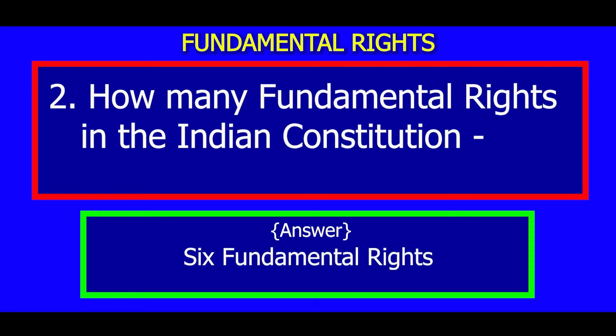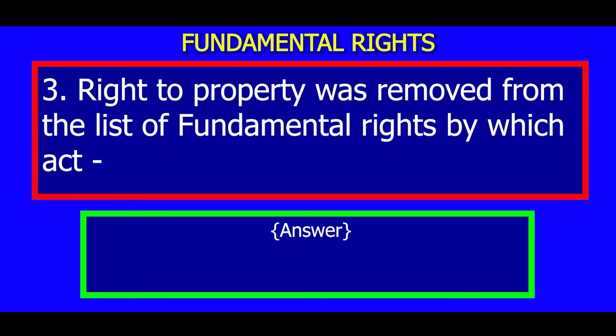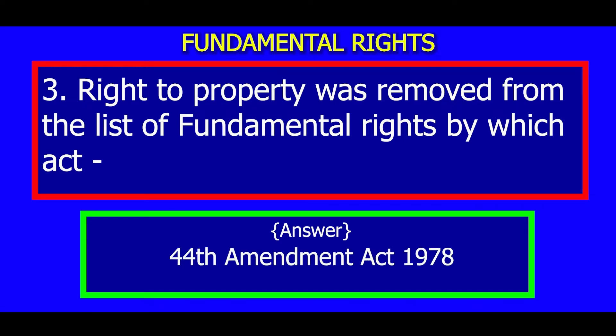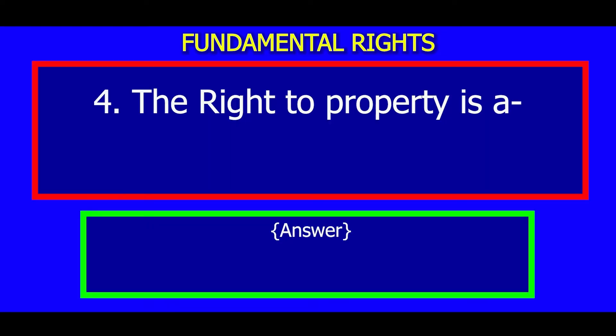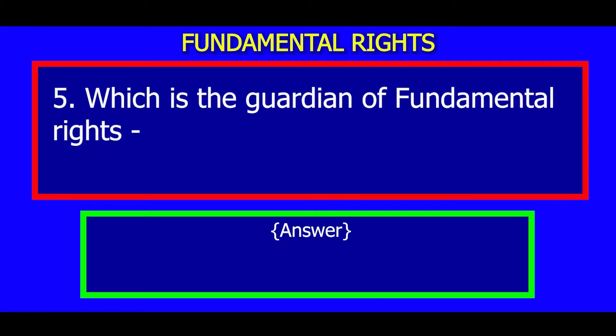Number 3: Right to property was removed from the list of fundamental rights by which act? Answer: The 44th Amendment Act, 1978. Number 4: The right to property is now a what? Answer: A legal right.